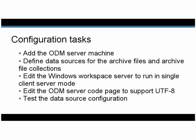You'll also edit the ODM server code page. If the archive files you want to access contain UTF-8 encoded data, you must configure ODM to support UTF-8 encoding to avoid translation errors. Finally, you'll test the data source configuration to be sure you can access the archive files and archive file collections you defined.